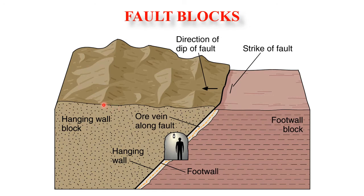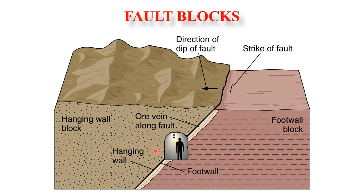The rock masses immediately above or below non-vertical faults or shear zones are referred to as hanging wall and foot wall respectively. Rocks translated large distances from their original site are known as allochthonous. They come to rest on autochthonous rocks that have retained their original location. Parautochthonous refers to locally transported rocks that have not been completely detached from their root zone.